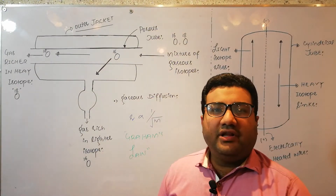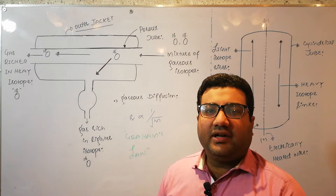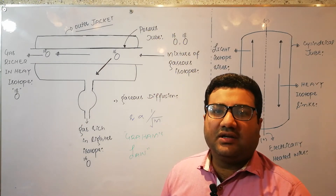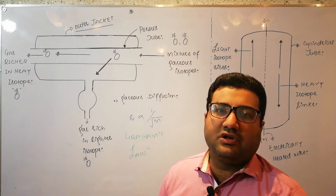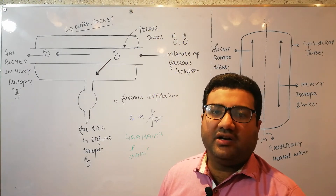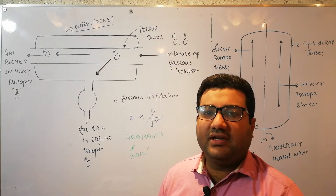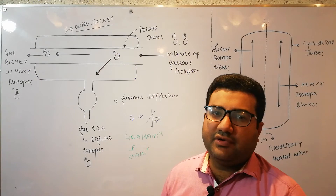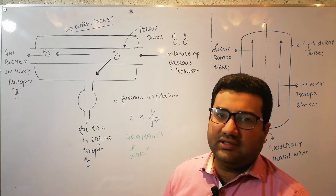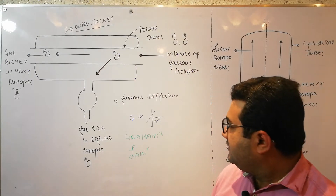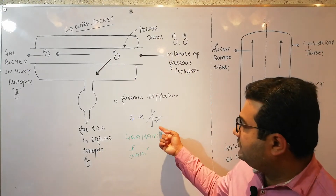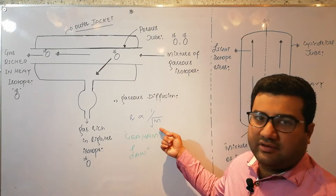As you already know, according to Graham's Law the rate of diffusion is inversely proportional to the square root of the molar mass.